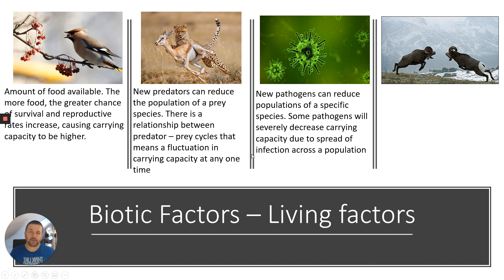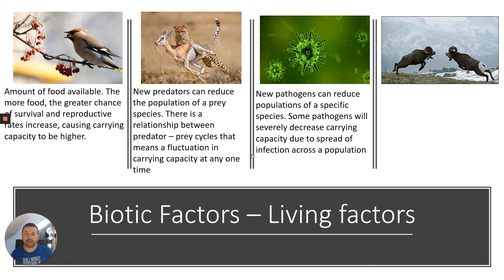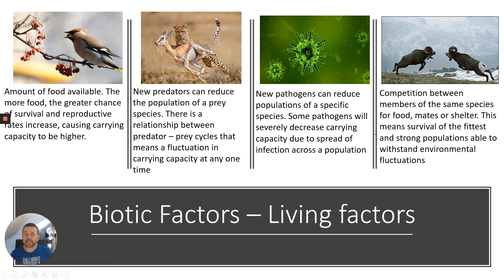Another key factor — particularly topical in 2020 — is that new pathogens can reduce populations of a specific species. Some pathogens can severely decrease carrying capacity due to the spread of infection across a population. This is why it's really important to have a varied genetic pool and diverse genetics within one species — you need variation for survival. Finally, competition between members of the same species occurs when environmental resources, particularly abiotic factors, are reduced — competition for food, mates, or shelter.